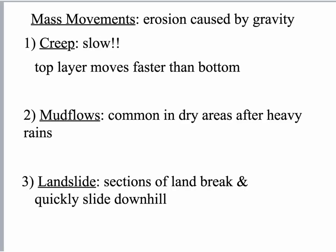There are six types of mass movements — you should be writing these down, these are your notes. Mass movement is erosion caused by gravity. The first three are creep, mud flow, and landslide. Creep is a very, very slow mass movement. It's the most common, actually. You don't really notice it until all of a sudden a tree or fence falls over.